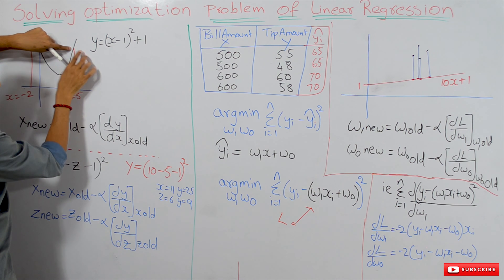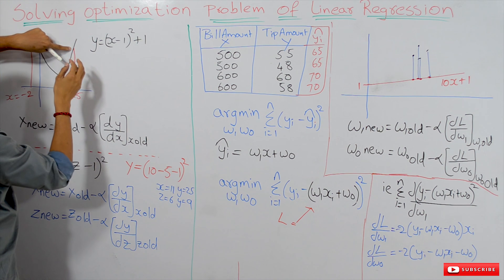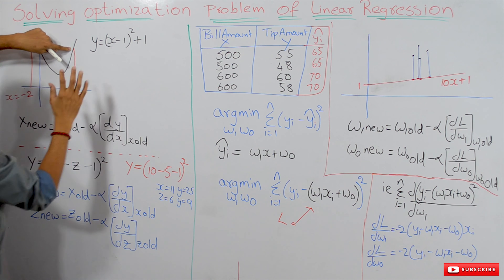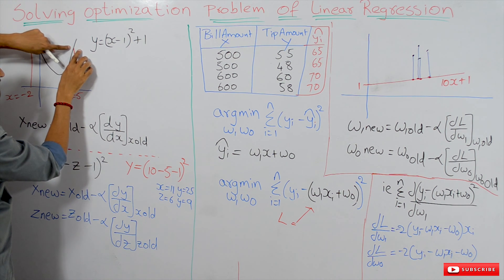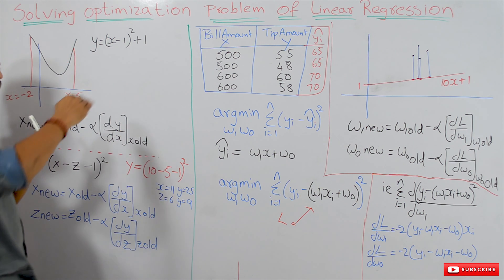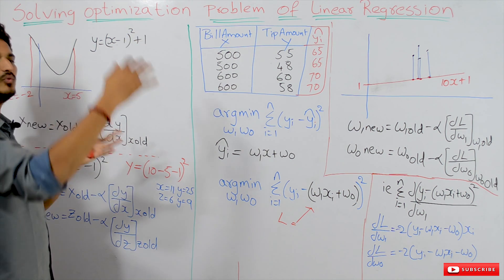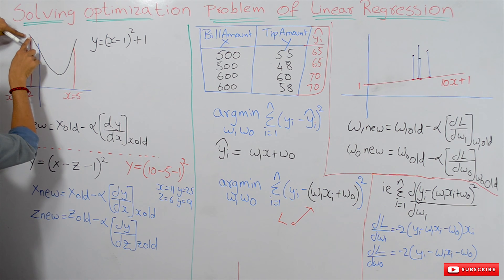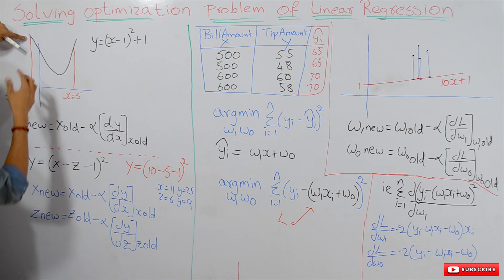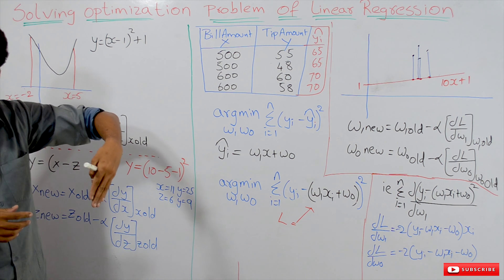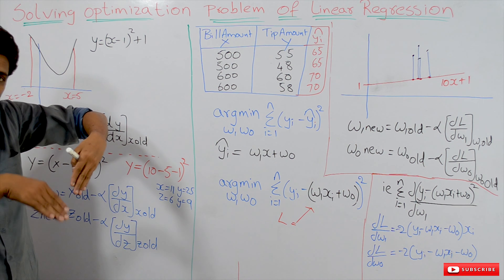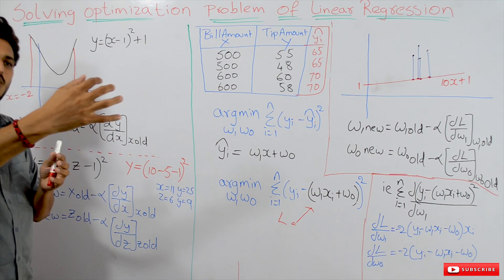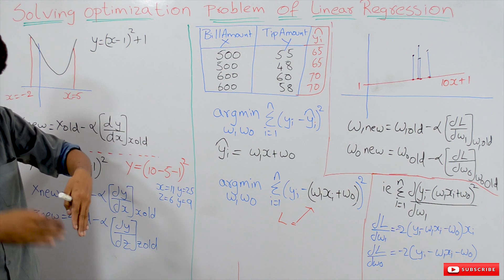When will the slope be positive? At this point, as x increases, y is increasing — slope is positive. As x increases and y is decreasing, the slope will be negative. If x is increasing and y is moving towards maximum, we have to reduce the x value. If y is decreasing, y is moving towards the minimum point, so we have to increase x. If y moves away from the minimum, decrease x; if y moves towards the minimum, increase x.